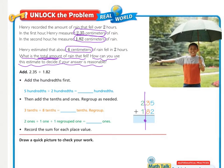In the hundredths place, we have a 5 and a 2. So 5 hundredths plus 2 hundredths equals 7 hundredths. Is there a need to regroup? Nope — 7 is less than 10, so we're okay.